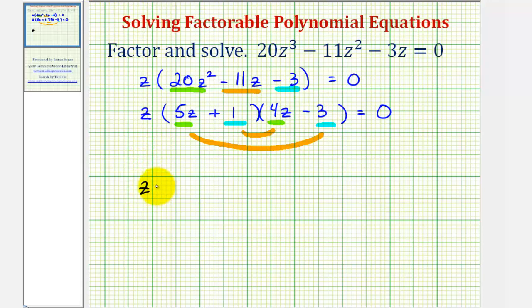Either the first factor, z equals zero, or the second factor of 5z plus 1 equals zero, or the third factor of 4z minus 3 equals zero. And now we'll solve each of these for z. Notice how this one's already solved for z, so that's one solution.